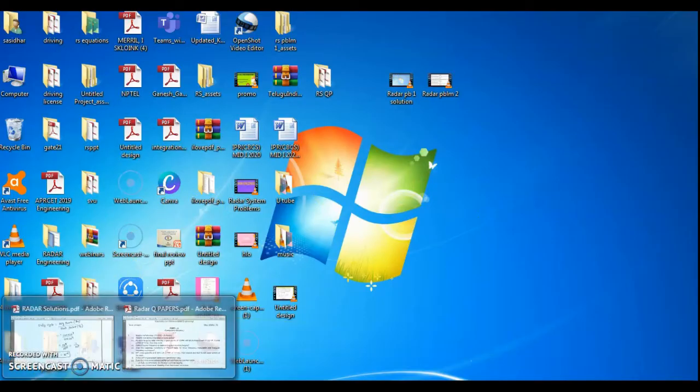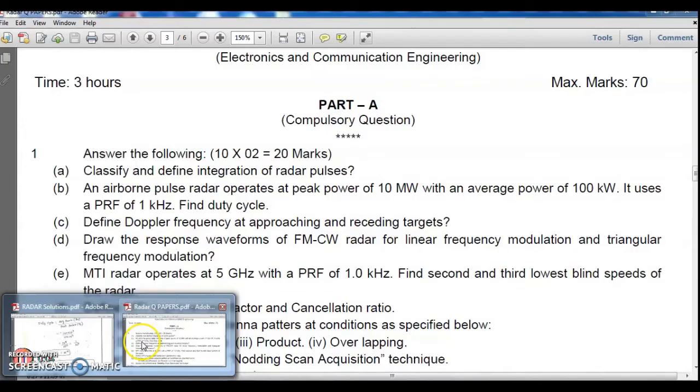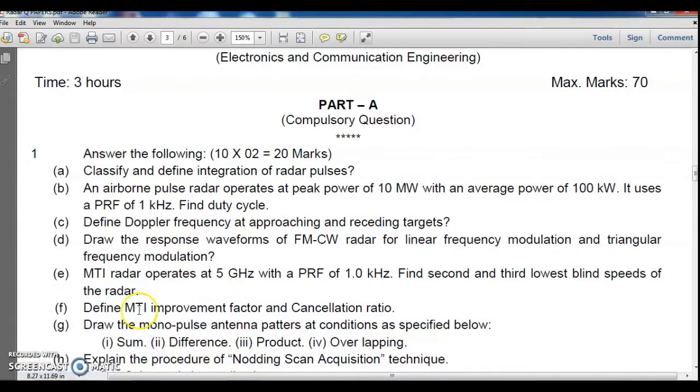Hello, we are discussing radar problems. In this session, we will see how to find duty cycle for a radar. This is the problem: An airborne radar operates at peak power of 10 megawatts with an average power of 100 kilowatts, which uses a PRF (pulse repetition frequency) of 1 kilohertz. Find the duty cycle.